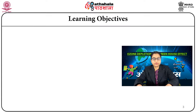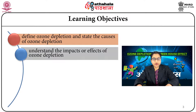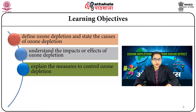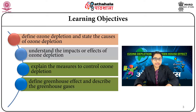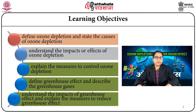This module has been developed with the intention that students will be able, after completing this module, to define ozone depletion and state the causes of ozone depletion, understand the impacts or effects of ozone depletion, explain the measures to control ozone depletion, define greenhouse effect and describe the greenhouse gases. They will also be able to understand the impacts of greenhouse effect and explain measures to control it.